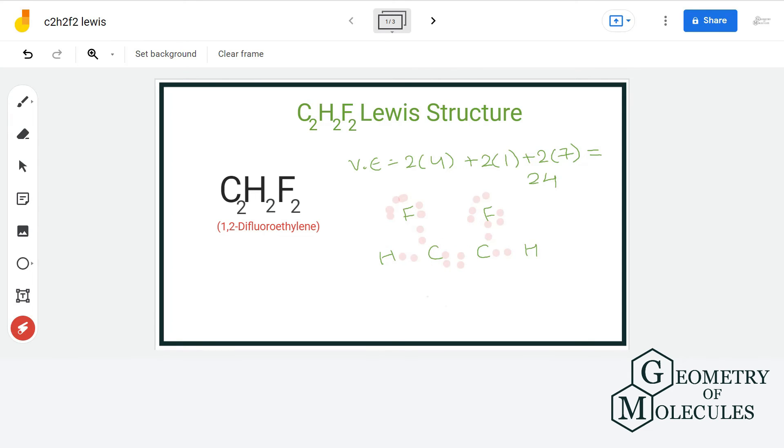And as the name of the molecule has prefix E-N-E, it suggests there is a double bond in the molecule. So this is the final Lewis structure of C2H2F2.